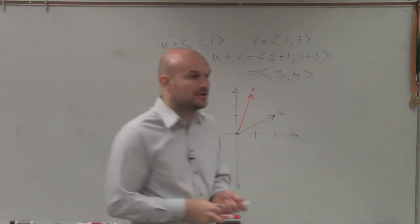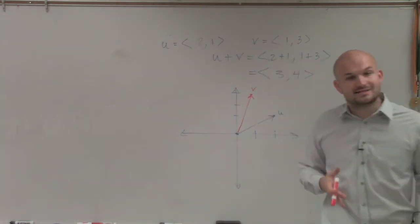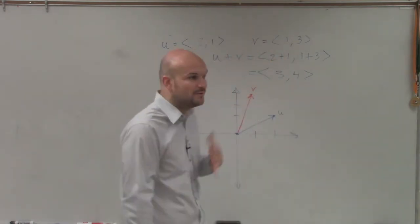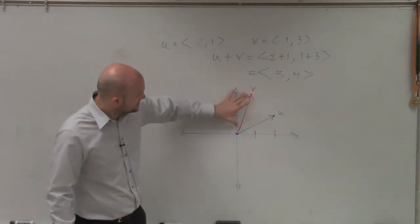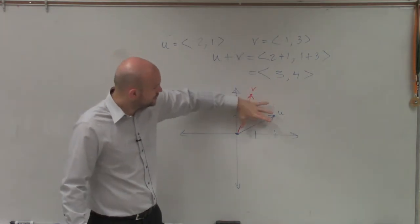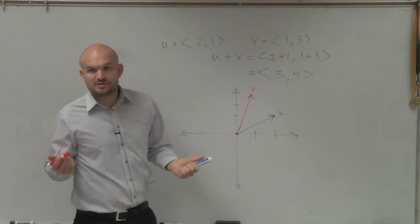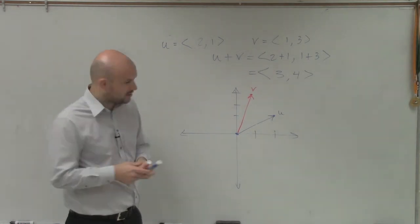So if we want to find the resultant vector, the way we show this graphically is to do our head-to-tail method. It doesn't matter which one you want to do head-to-tail, but we can simply take v and place it at the end of u, or you can take u and place it at the end of v. So I'll show this both ways, and you guys will be able to see the resultant vector.